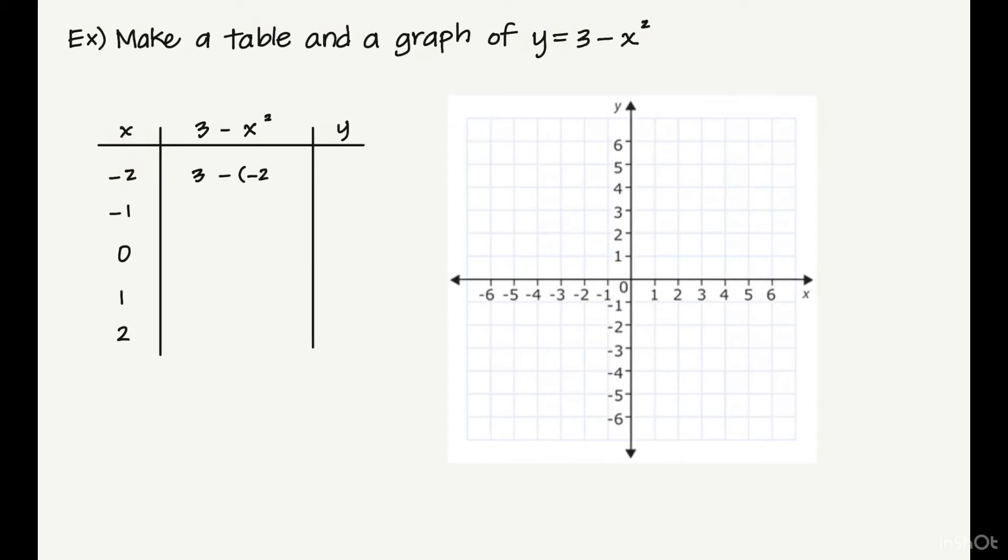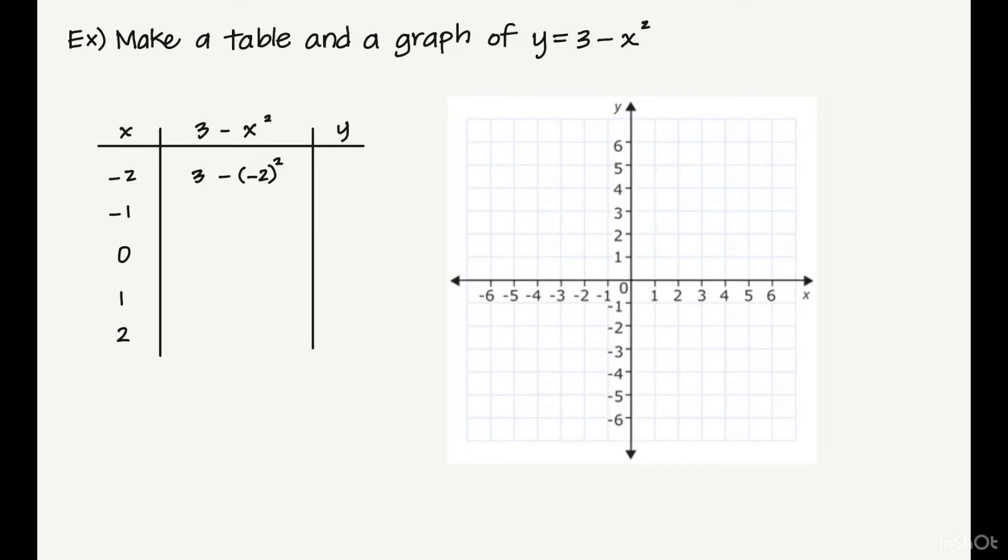Three minus negative 2 squared. Negative 2 squared is 4, so 3 minus 4 is negative 1. Next is 3 minus negative 1 squared. Negative 1 squared is 1, so 3 minus 1 is 2. Now we're going to plug in 0: 3 minus 0 squared is the same as just 3 minus 0, which is 3. Three minus 1 squared is 3 minus 1, which is 2. And then 3 minus 2 squared, so 3 minus 4 is negative 1.